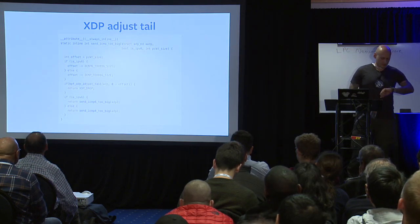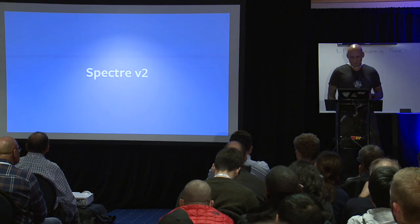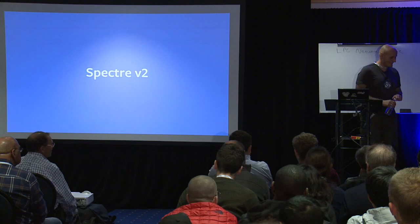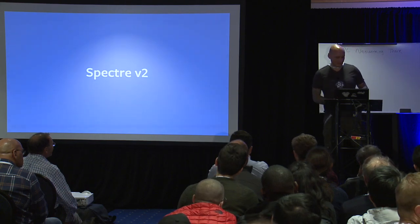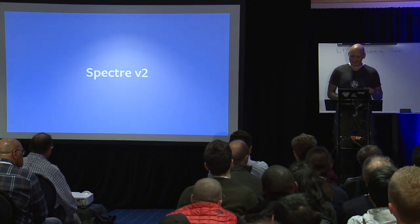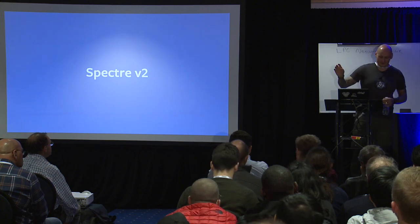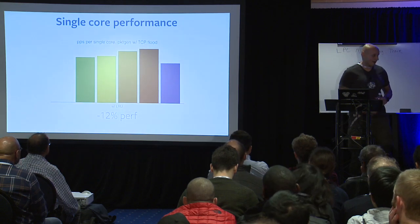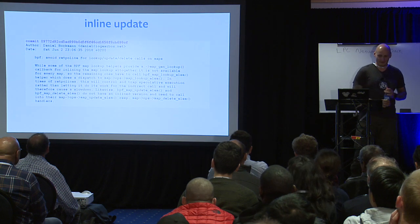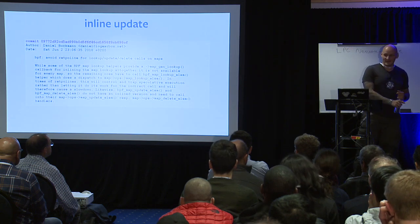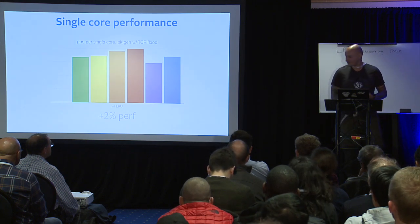Everything was great until we built our kernel with Retpoline mitigations, where every indirect call became super expensive. Running the same single-core SYN flood test — boom, a big regression compared to our original version. Luckily, Daniel came up with the idea of inlining not only lookups (which were already inlined) but updates as well. After Daniel's patch we were still better than the original version. Thanks, Daniel.